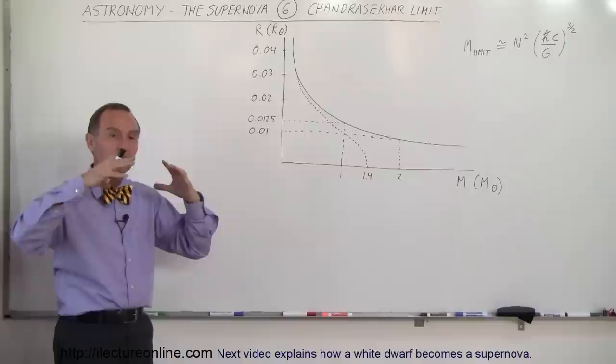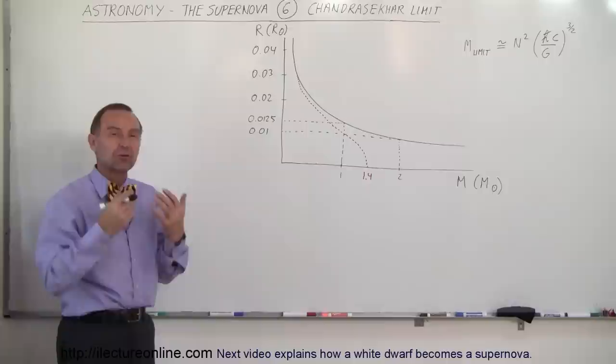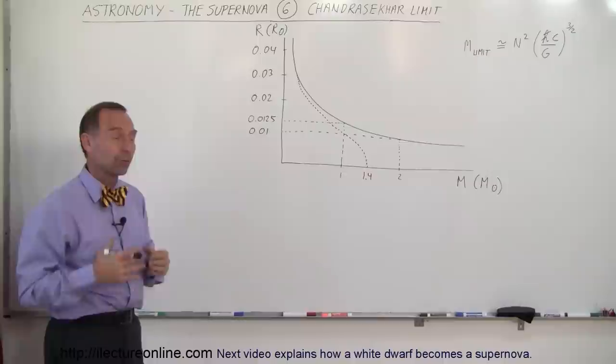The reason it wouldn't collapse completely is because the electron degeneracy pressure would push back and hold the white dwarf from collapsing.